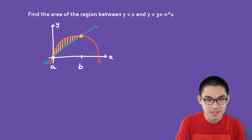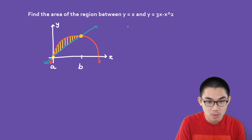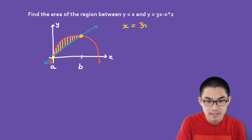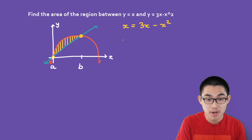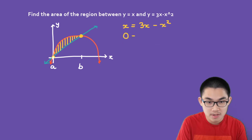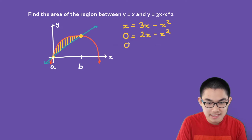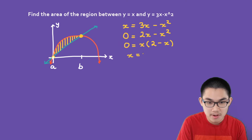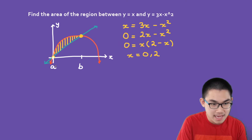To find a and b, we need to find the intersections. Since y equals x and y also equals 3x minus x squared, we can set them equal: x equals 3x minus x squared. Subtracting x from both sides gives 0 equals 2x minus x squared. Factoring out x: x times (2 minus x), so x equals 0 and x equals 2. Therefore a equals 0 and b equals 2.